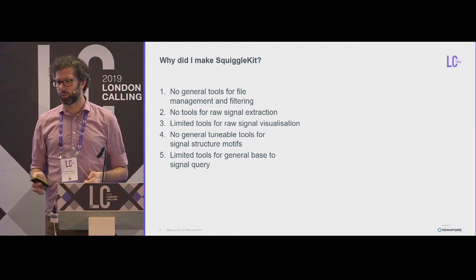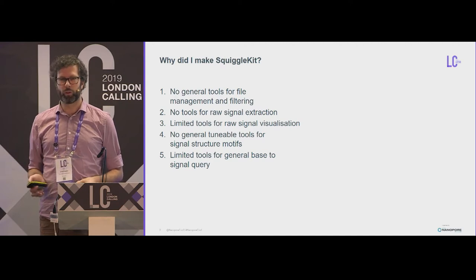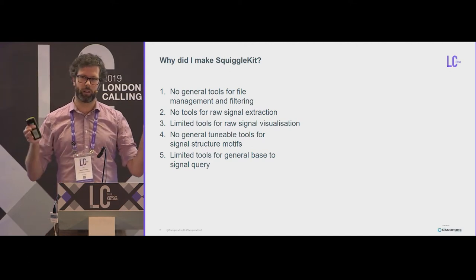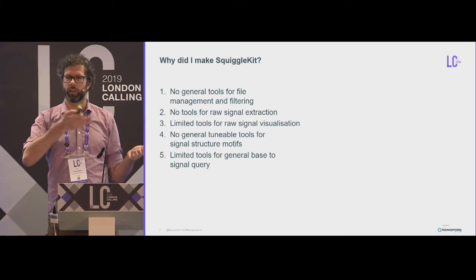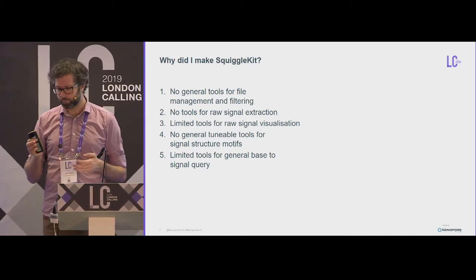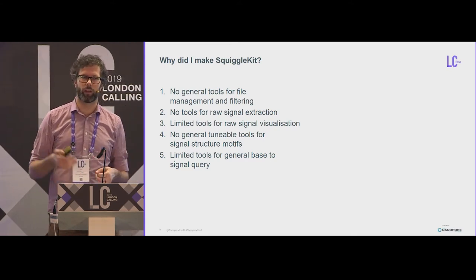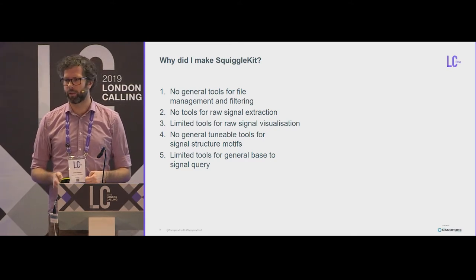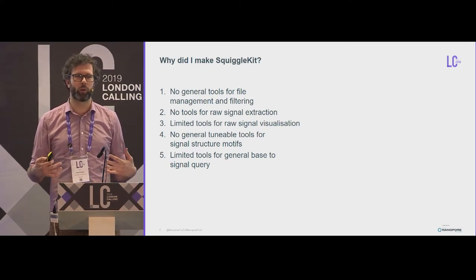There were no general tunable tools for structural changes, and I'll explain what that means in a minute. And there were limited tools for general base to signal query. So, at the moment, a base caller goes from the signal space to A, T, Cs, and Gs. But there was no real way to go backwards. A few people, like Matt Luse, had done a bit of work on this, and some stuff in Scrappy from Nanopore. But I wanted to make that a little bit more general use.